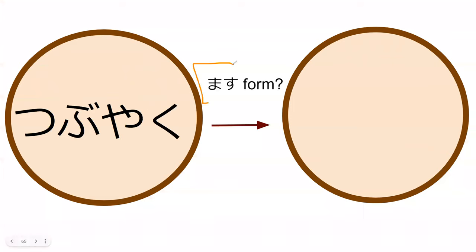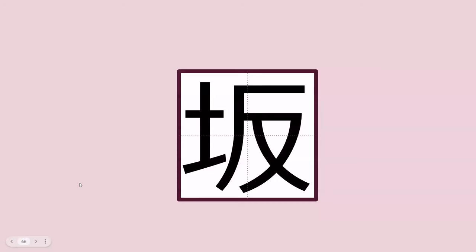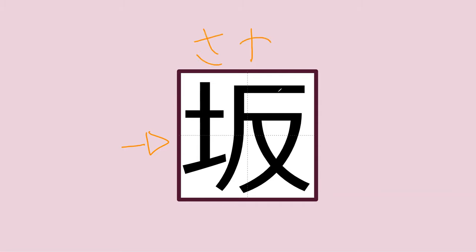Do you know what the masu form of つぶやく is? つぶやきます. Perfect — つぶやきます. Do you happen to recognize this kanji? We saw this word on an earlier page. It was the hill. A hill or a mound, right? Yes — this is 坂 (saka). 坂 means hill.